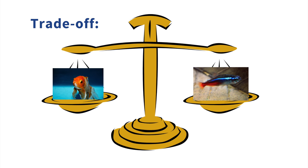A trade-off is about choosing between two things. For this example, we'll talk about choosing what fish to keep in our fish tank. We can either keep goldfish or neon tetras. Goldfish and neon tetras cannot live in the same tank as one another, because they prefer different water parameters and the goldfish might eat the tetras.